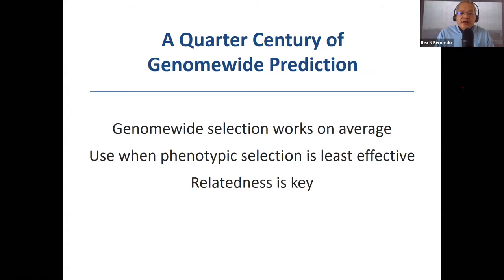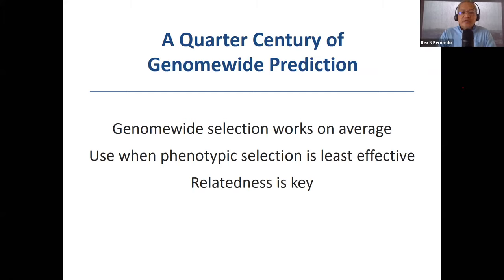Regarding the gain on NIRS — how often was NIRS recalibrated? It was done only once at the start of the breeding process and was not recalibrated. In hindsight, we could have and should have. If you are working on a trait measured by NIRS and selection is changing the biochemical profile, you need to be concerned that NIRS calibrations may no longer be valid after a few cycles of selection.